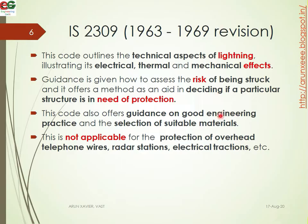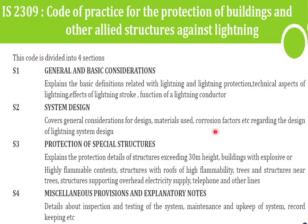IS 2309 also offers guidance on good engineering practice and the selection of suitable materials for lightning protection systems. This code is not applicable for radar stations, telephone wires, electrical traction, and similar communications equipment. It specifically covers protection of buildings and other allied structures against lightning.